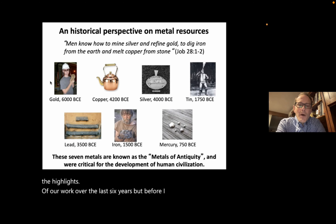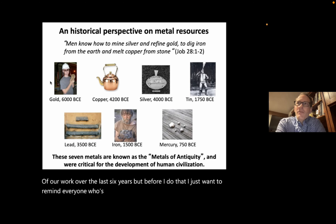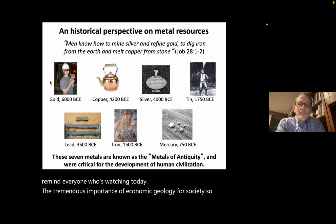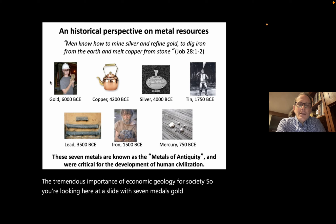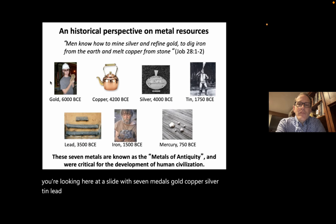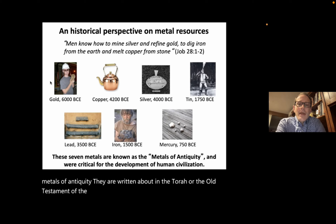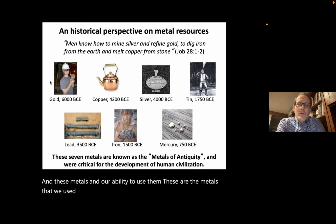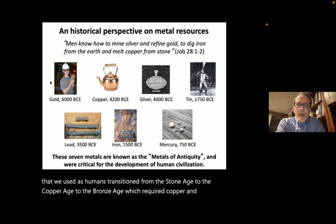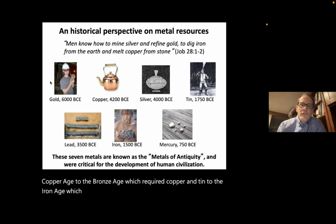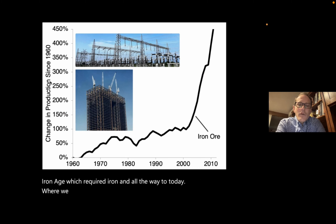Before I walk through our work, I want to remind everyone of the tremendous importance of economic geology for society. You're looking at seven metals — gold, copper, silver, tin, lead, iron, mercury — referred to as the metals of antiquity, written about in the Torah or the Old Testament of the Hebrew Bible. These are the metals humans used as we transitioned from the stone age to the copper age, to the bronze age, to the iron age, and all the way to today where we use a phenomenal amount of metals.